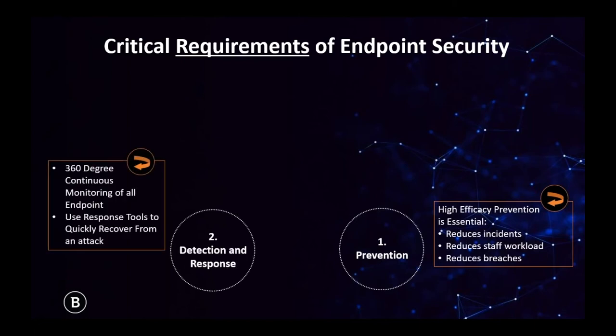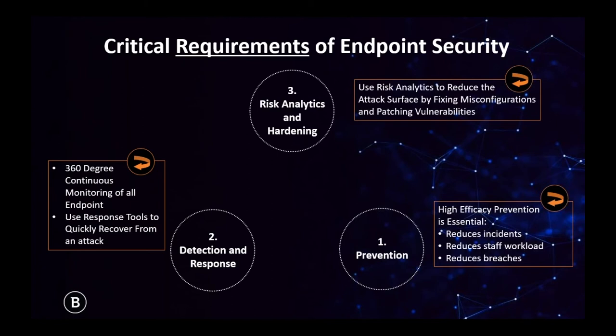We like to combine this with a product that also has detection and response. Detection and response is becoming increasingly important in today's threat landscape. A good detection and response product should make it very easy to figure out the root cause of a breach or incident, identify which processes were spun up, which files were modified, and allow the security analyst to effectively remediate the situation. The third requirement is risk analytics and hardening — if the endpoint is hardened to reduce the attack surface, there's less risk for breaches in the first place.